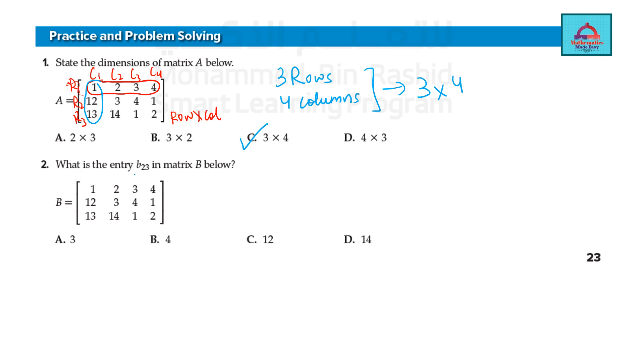Now what is the entry at B23? B23 means second row. The first element denotes the row, the second element column. So third column. Second row means R1, R2, R3, second row. C1, C2, C3, C4, third column. So second row, third column element is 4. So B is the answer.